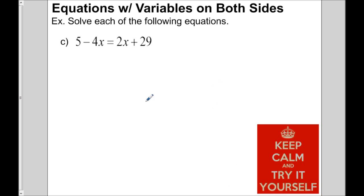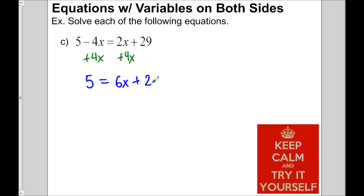We get rid of the smaller variable term, which is negative 4x — smaller than 2x. So we add 4x to both sides. On the left we're left with 5, and on the right 2x plus 4x is 6x plus 29. Write down what you're doing underneath the term you're working with — write like terms underneath each other.